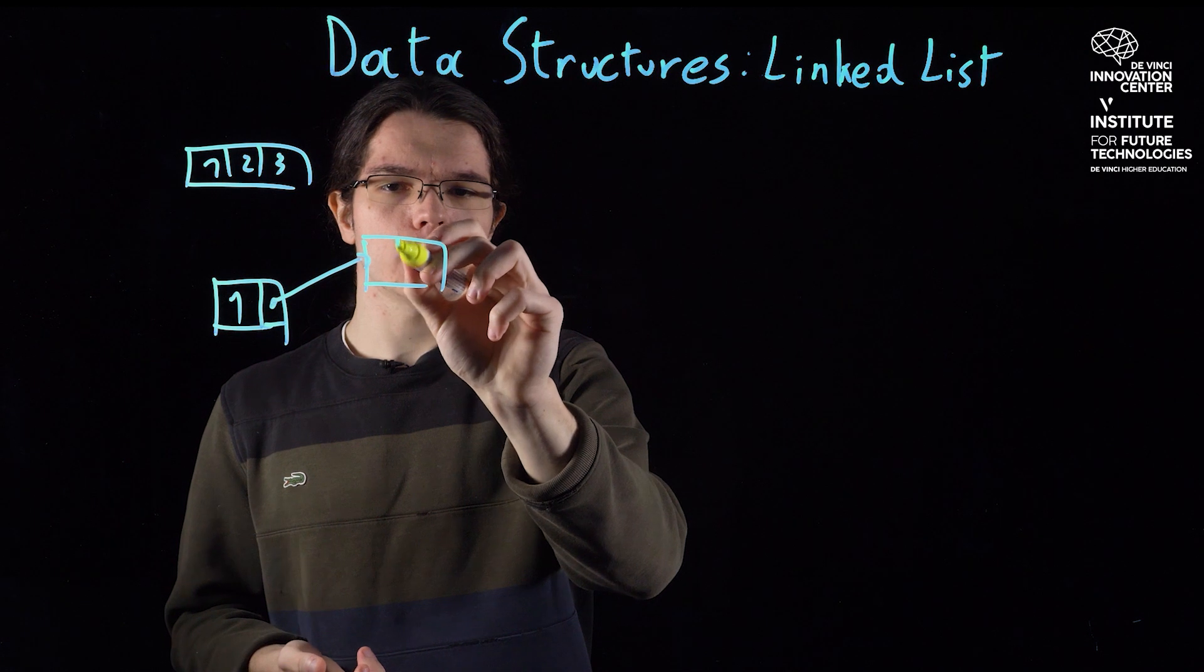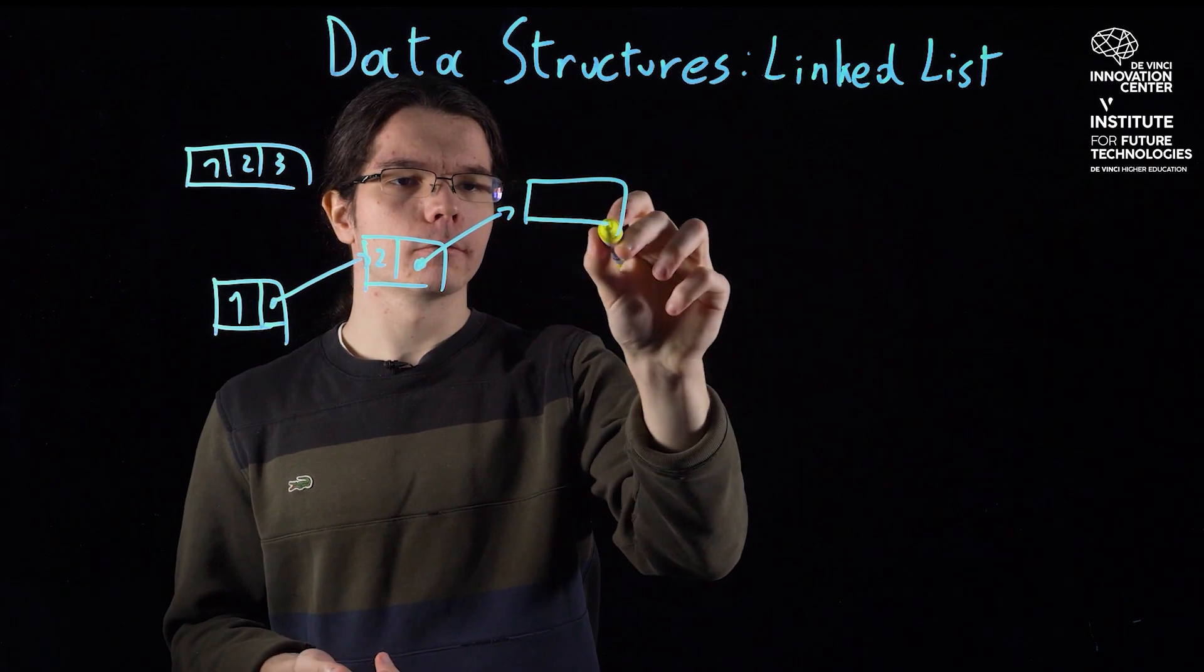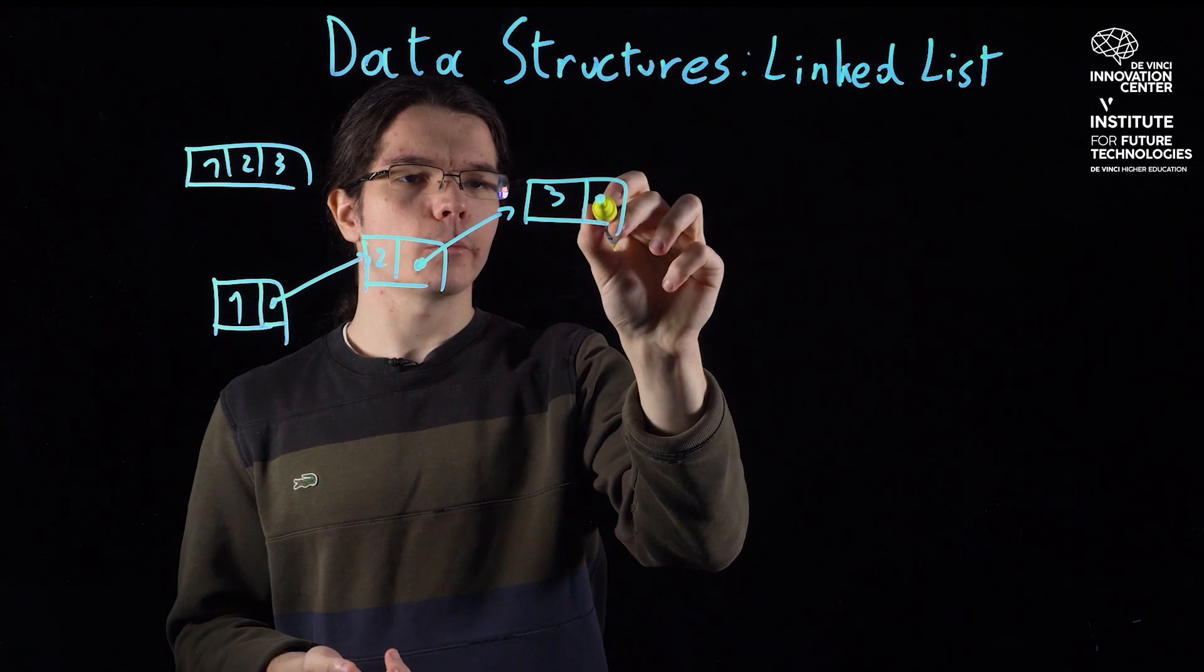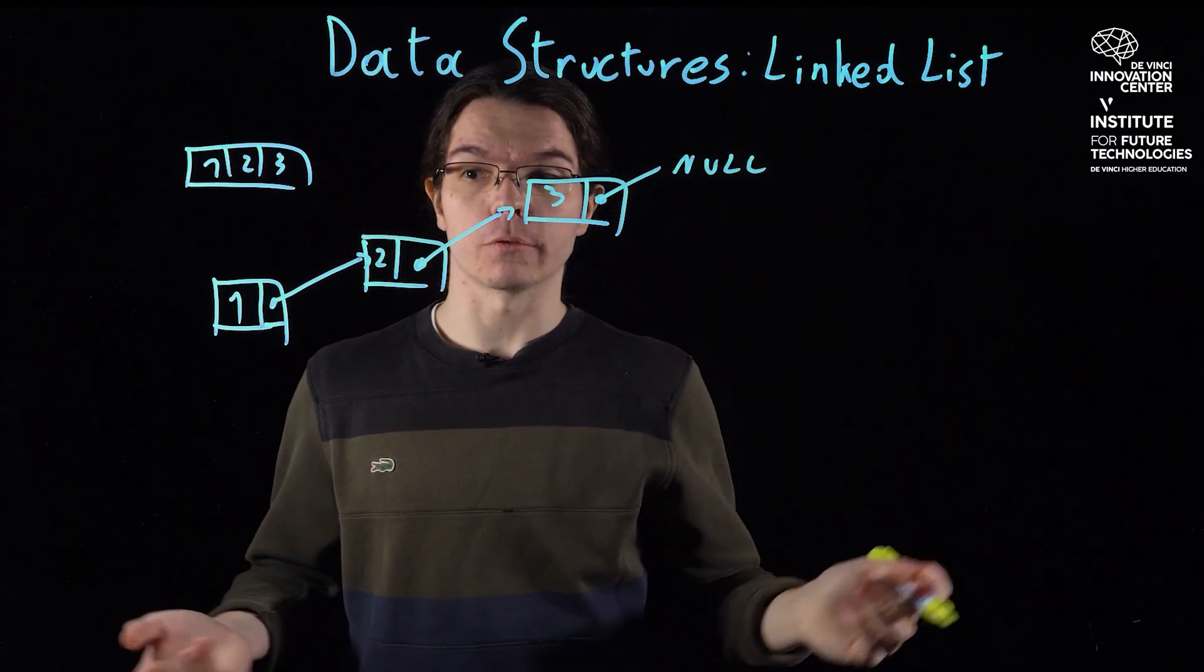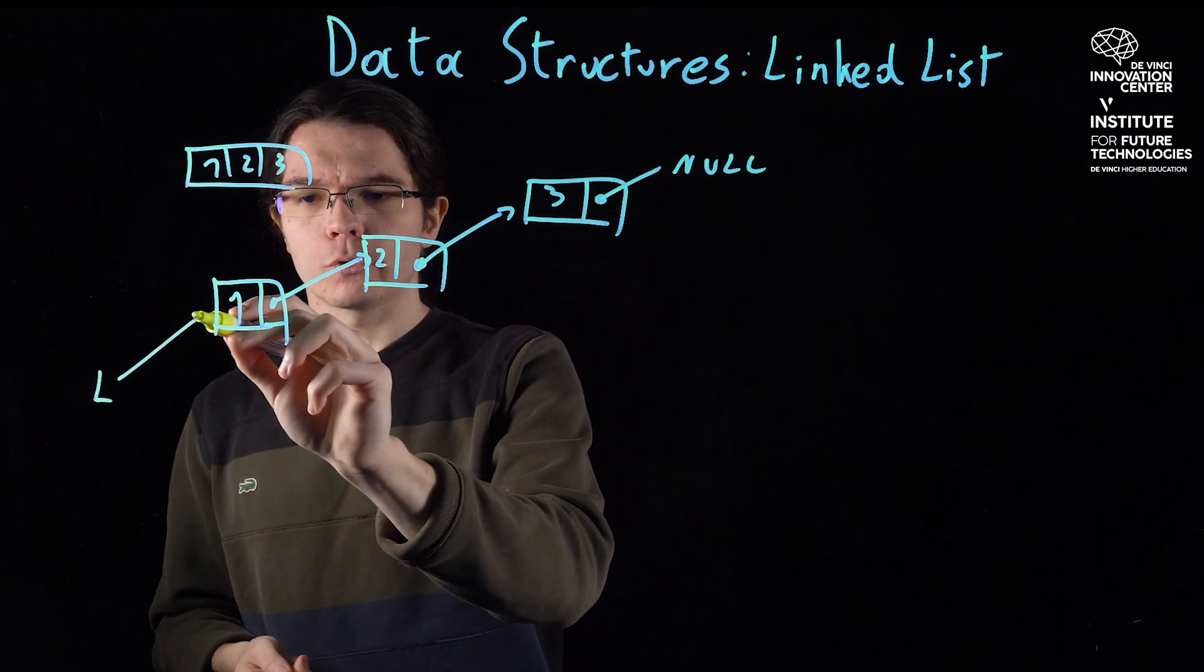So, for example, here I have 1, then 2, and then a pointer to 3, and then this pointer here points to 0, so it's the end of the list. And then I can say my list, let's call it L, just points to the first element.